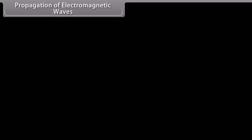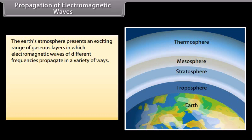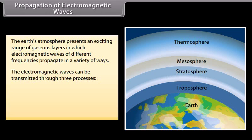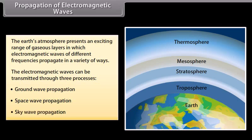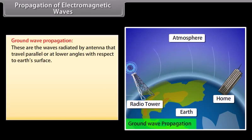The Earth's atmosphere presents an exciting range of gaseous layers in which electromagnetic waves of different frequencies propagate in a variety of ways. Electromagnetic waves can be transmitted through three processes: ground wave propagation, space wave propagation, and sky wave propagation.